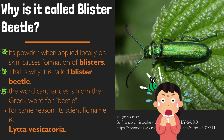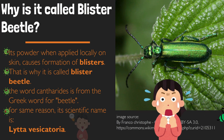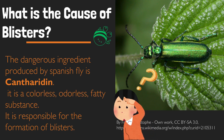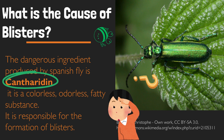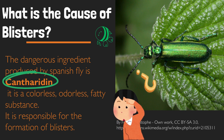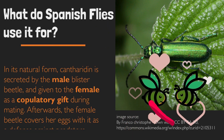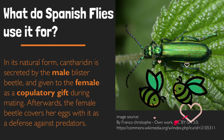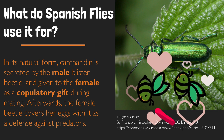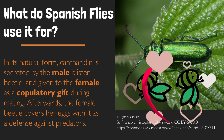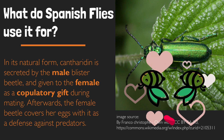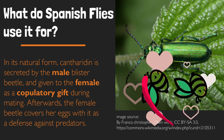The word 'cantharidin' is from the Greek word for beetle. Its scientific name is Lytta vesicatoria. The dangerous ingredient produced by Spanish fly is cantharidin. It is a colorless, odorless, fatty substance responsible for the formation of blisters. In its natural form, cantharidin is secreted by the male blister beetle and given to the female as a copulatory gift during mating. Afterwards, the female beetle covers her eggs with it as a defense against predators.